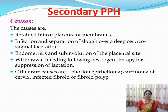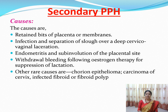Secondary PPH causes include retained bits of placenta or membranes, infection, separation of slough over a deep cervico-vaginal laceration (where slough separation causes bleeding from the site), endometritis, sub-involution of the placental site, and withdrawal bleeding following oestrogen therapy used for suppression of lactation. Other causes include chorioncarcinoma, carcinoma of the cervix, infected fibroid, and fibroid polyp — all of which can also cause bleeding.